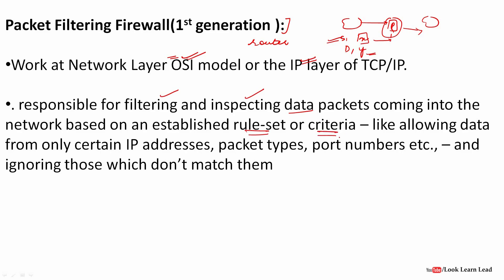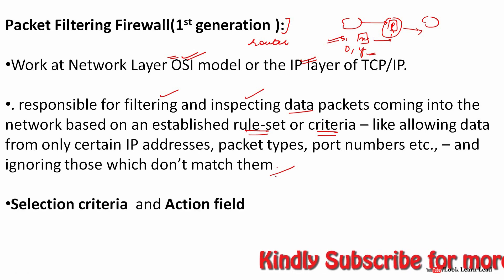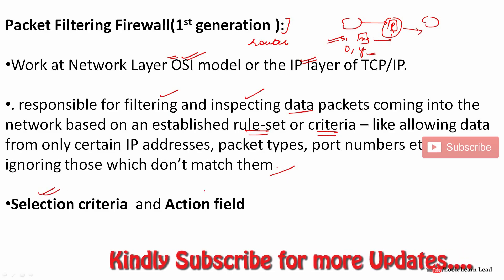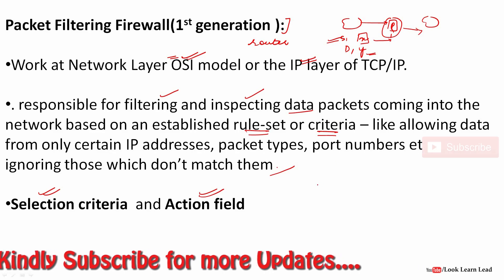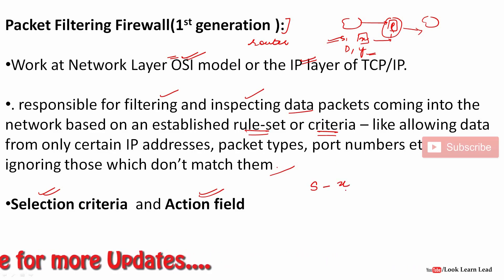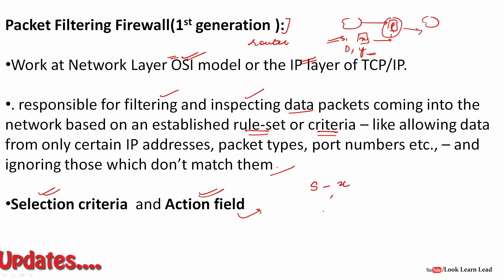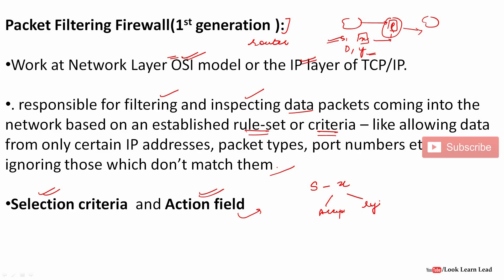The rules can include allowing data from only certain IP addresses, packet types, or port numbers, and ignoring those that don't match. The two key components are the selection criteria — for example, if the source address is X — and the action field, which is either accept or reject the packet. This is how the packet filtering firewall works at the network layer.